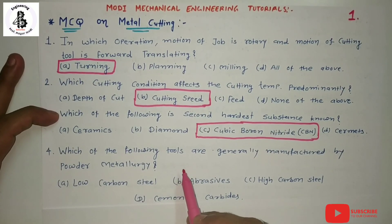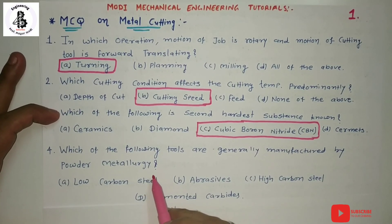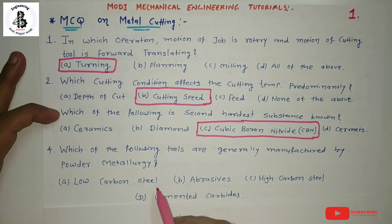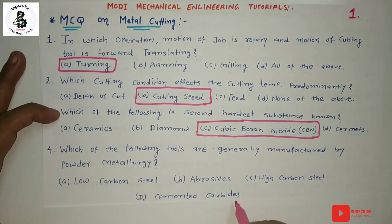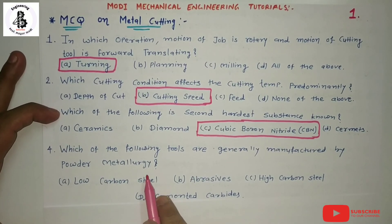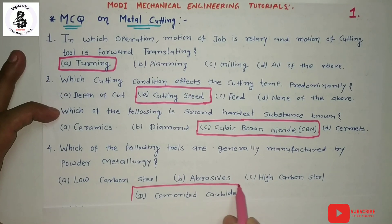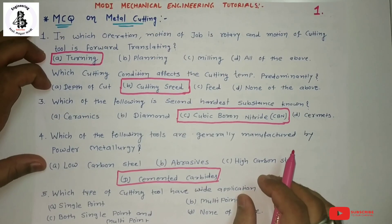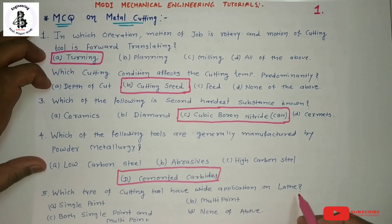Fourth question: Which of the following tools are generally manufactured by the powder metallurgy process? Powder metallurgy is used for making complicated components with higher hardness. The options are: low carbon steel, abrasives, high carbon steels, and cemented carbides. Cemented carbide, which has higher hardness, is manufactured by the powder metallurgy process. So the answer is cemented carbide.